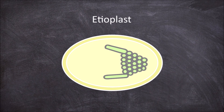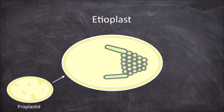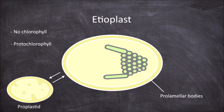The next plastid is the etioplast. Etioplasts are formed from proplastids in seeds when they undergo germination in the dark. This process is sometimes reversible. They also do not contain chlorophyll, but instead the precursor to chlorophyll, protochlorophyll, which is a pale yellow-green pigment. The internal structure consists of semi-crystalline tubes called the pro-lamella bodies.